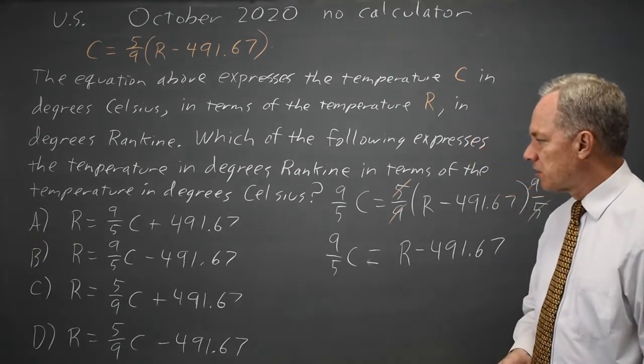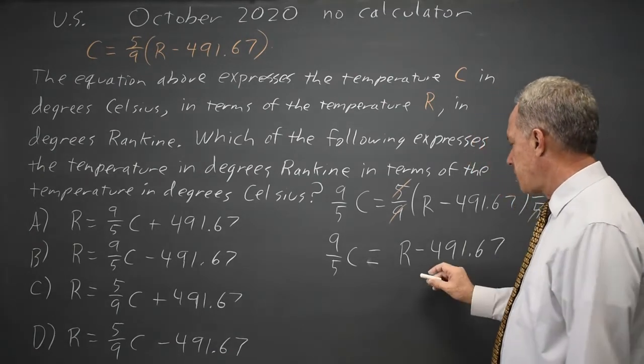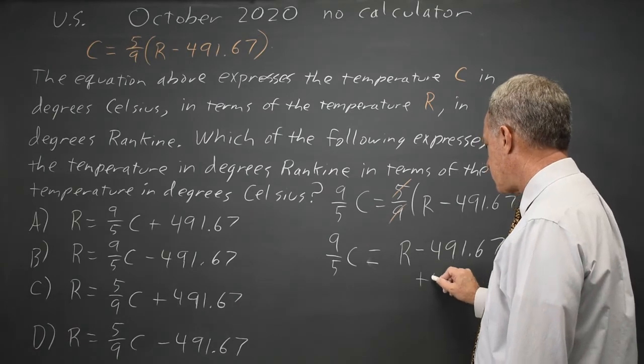I'm still trying to get R by itself. Since I'm subtracting 491.67 from R, I'm going to add that to both sides.